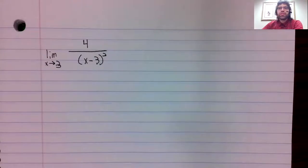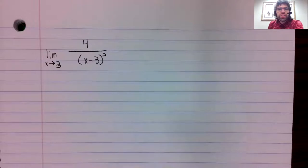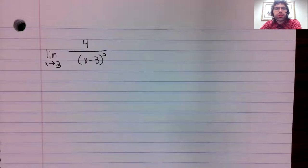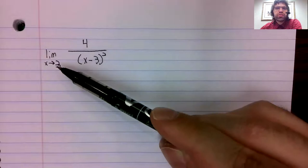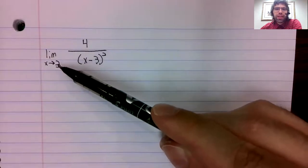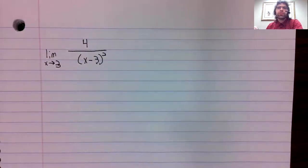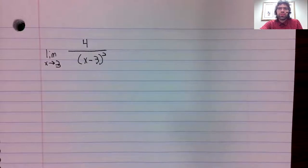Let's investigate this via example. The limit as x approaches 3 of 4 divided by x minus 3 squared. Now this is a rational function, but 3 is not in its domain. So we can't use continuity to evaluate this limit.